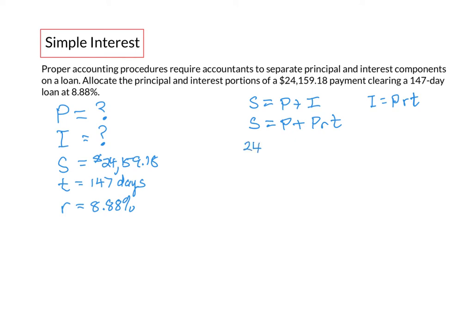Let's substitute our values. S is $24,159.18 equals P, we don't know, plus P. For R we need to remove the percent. To get rid of a percent you divide by 100% and when you do that you're moving the decimal two places to the left. So this would become 0.0888 and we can substitute that in here and I'm going to use brackets for multiplication.